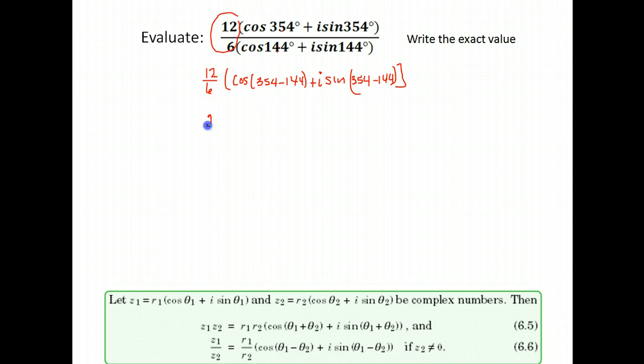Well, 12 divided by 6 is just 2, and for our angle, 354 minus 144 gives me 210. So I have cosine of 210 degrees plus i sine 210 degrees. Now it asks me for an exact value, so I need to decide, is 210 one of those angles that I know the exact values for? Where is 210 degrees? It's past 180. It is how far past 180 degrees? It's 30 degrees, and we do know exact values for 30 degree angles.